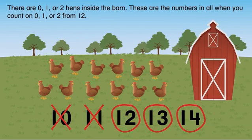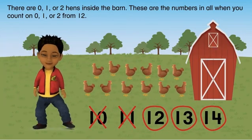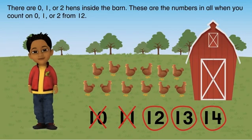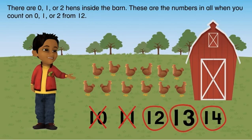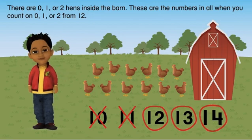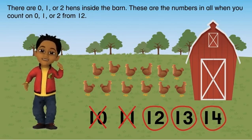Why are there 3 possible answers? There are 0, 1, or 2 hens inside the barn. These are the numbers in all when you count on 0, 1, or 2 from 12. Great thinking!